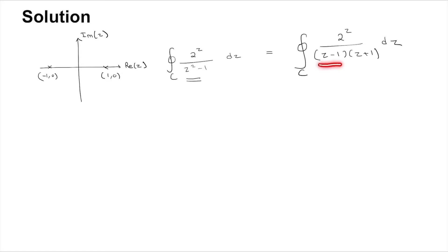This is the term contributing to the pole at 1 and this is the term contributing to the pole at -1. Since we have the contour going around the (-1, 0) pole, we can treat this as f(z). So this becomes 2πi times the function value at -1.